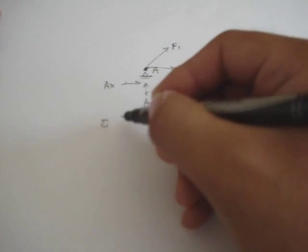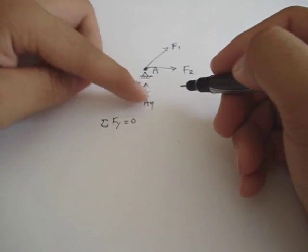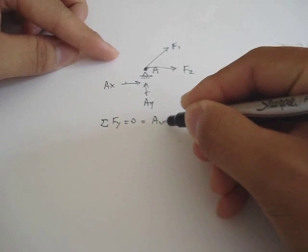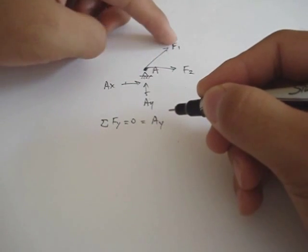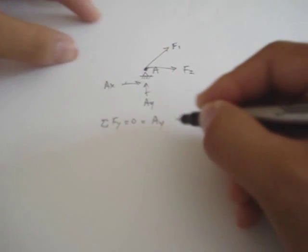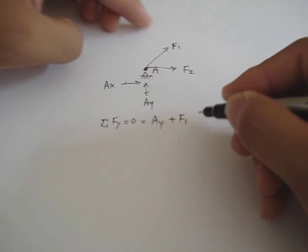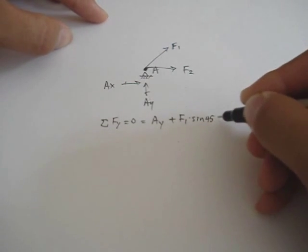Alright, now let's perform the equilibrium. Let's do sum of the forces in the y. It's equal to zero. This will be equal to plus Ay. And then you have the y component of F1 going up. So it should be F1 times sine of 45 degrees.